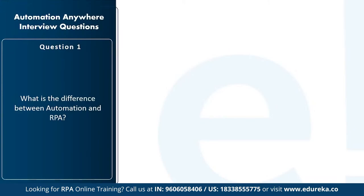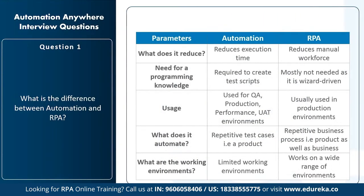You can differentiate automation and RPA on various parameters: what does it reduce, the need for programming knowledge, usage, what does it automate, and what are the working environments. Automation reduces execution time, while robotic process automation reduces the manual workforce. For automation, you do need programming knowledge to create test scripts, but for RPA you do not actually need programming knowledge as it's mostly wizard driven. You'll have a tool with various functionalities to automate different tasks.